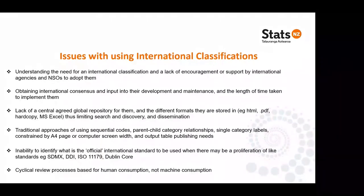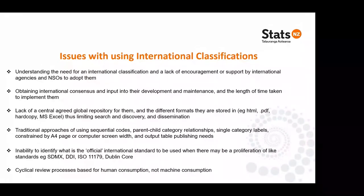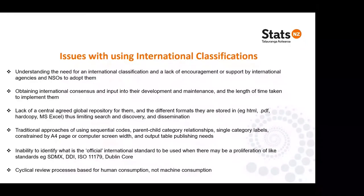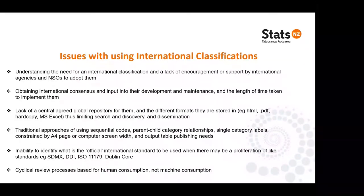Obtaining international consensus and input into the development and maintenance of classifications is challenging when you've got 194 recognised countries in the UN. Not all of those turn up to the Committee of Experts or are involved in discussions, but we have a massive challenge with cultural, legal and language issues in trying to get consensus. Then there's the length of time taken to implement them — we have countries still using classifications developed in 1958 and 1968, let alone getting them onto the current versions of industry, occupations, qualifications or research classifications.